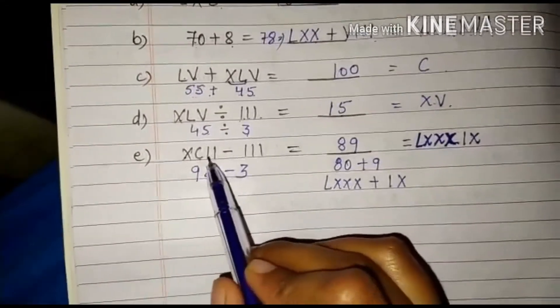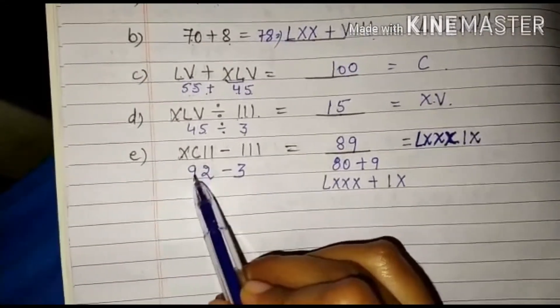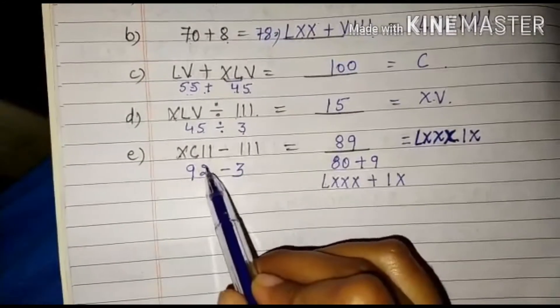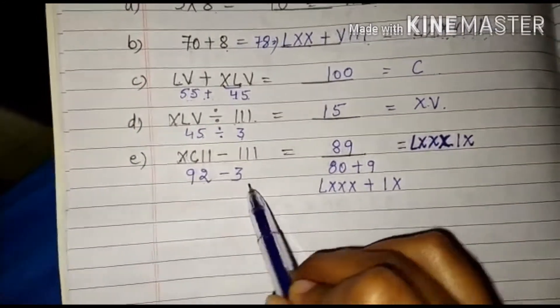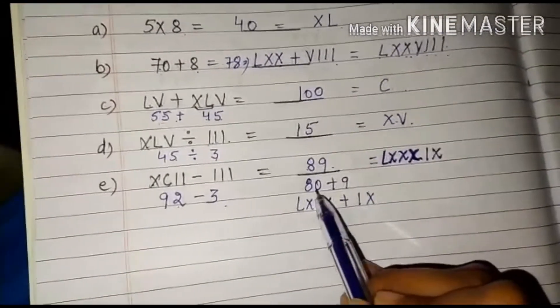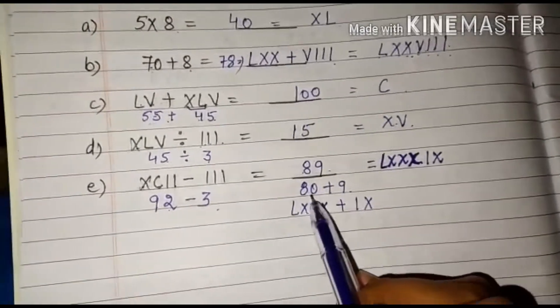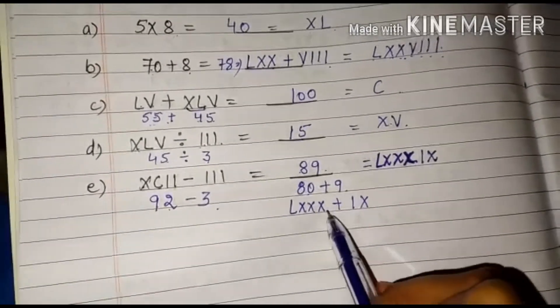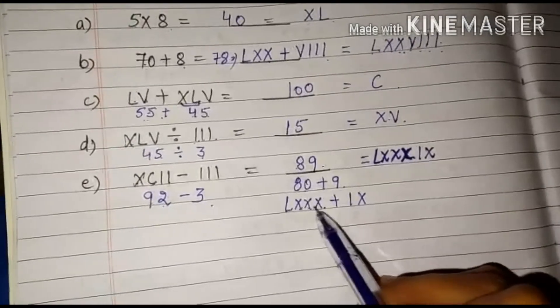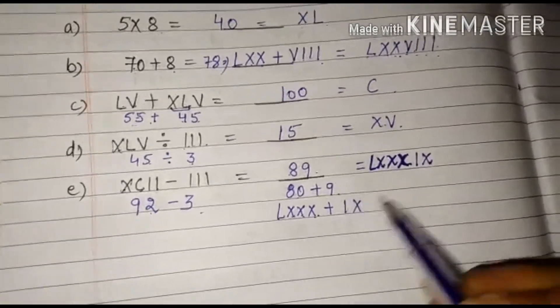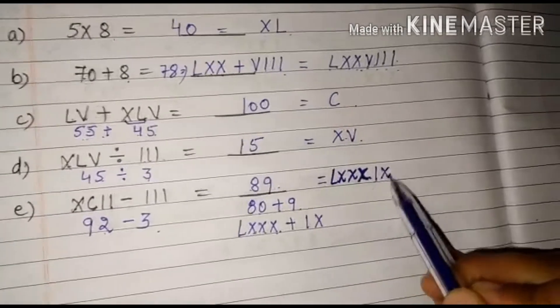Now XCII. So XC is 90 and II two times that is 92 minus 3. So 92 minus 3 is 89. 89 is 80 plus 9. 80 can be written as LXXX. 50, 60, 70, 80 plus 9 is IX. So it is LXXXIX.